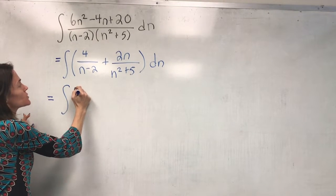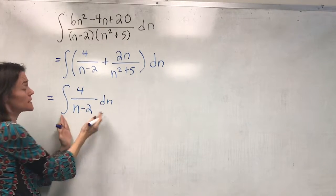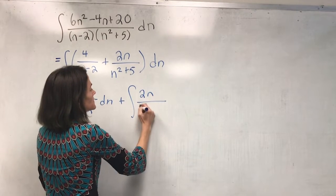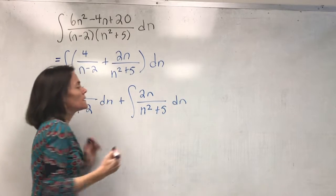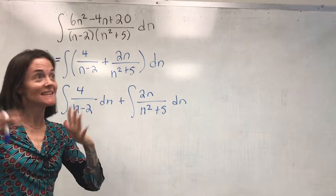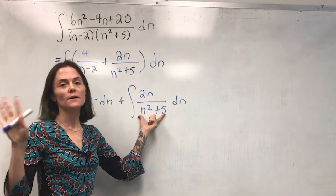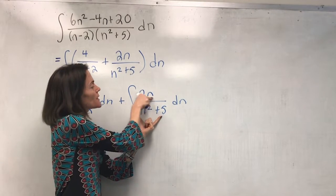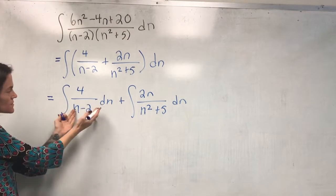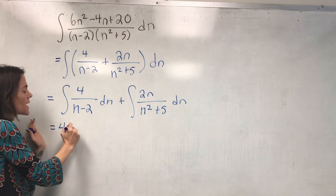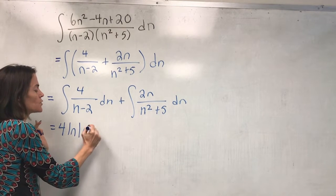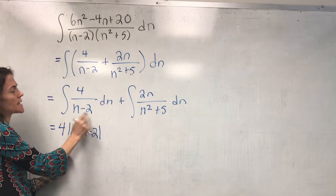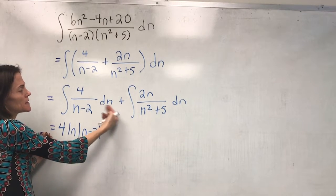I'll write this as two integrals. The first is a natural log, as we will see. The second should yell substitution at you, because n squared plus 5 is in the denominator and its derivative, 2n, is in our integrand. The first integral gives 4 ln|n minus 2|. For the first integral you could also use u equals n minus 2, where du equals dn, and arrive at the same result.